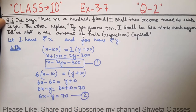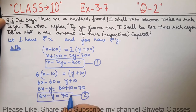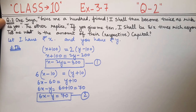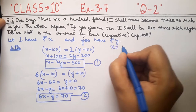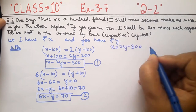Now we have our two equations and we have to solve them by any method — elimination, substitution, or cross multiplication. I will use the substitution method. We will find x from equation 1: x is equal to 2y minus 300. Let us call this equation 3.